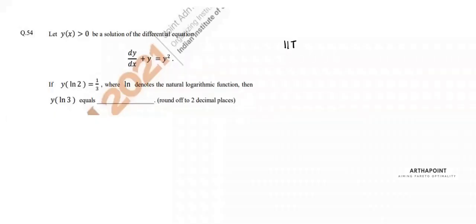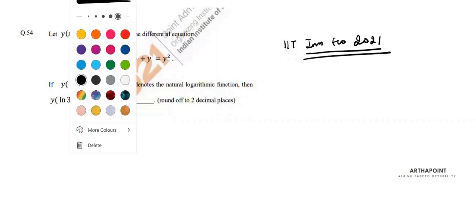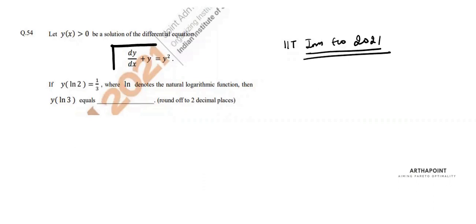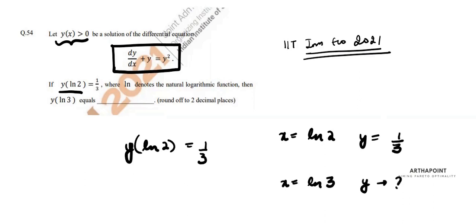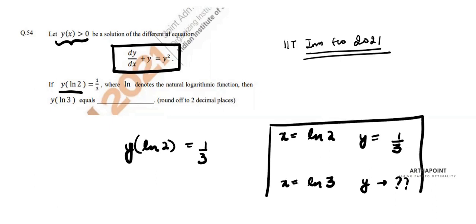This is question number 54 of IIT JAM Economics 2021 paper. The question gives a differential equation and says y(x) is the solution. It states y(ln2) = 1/3, meaning when you put x = ln2, y = 1/3. When you put x = ln3, it asks you to find the value of y.